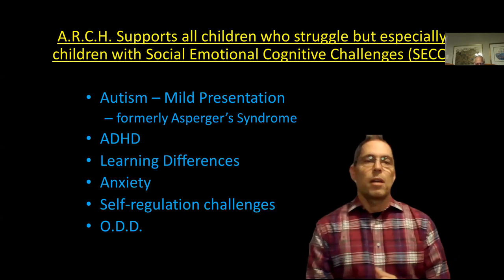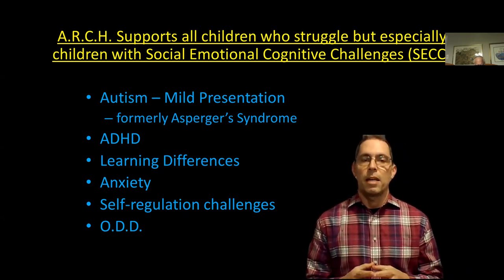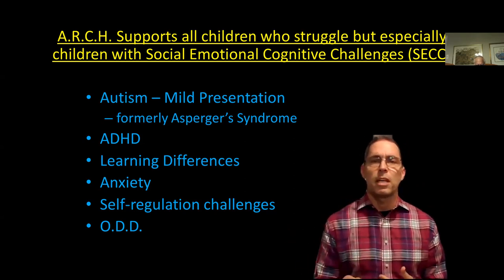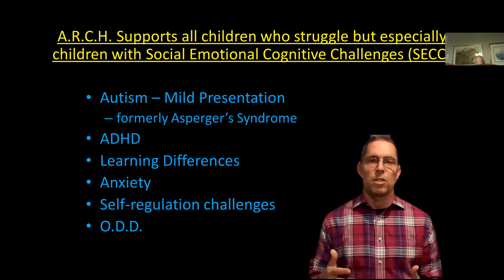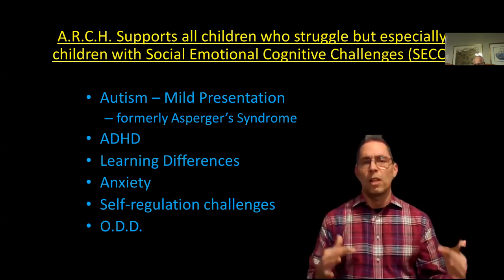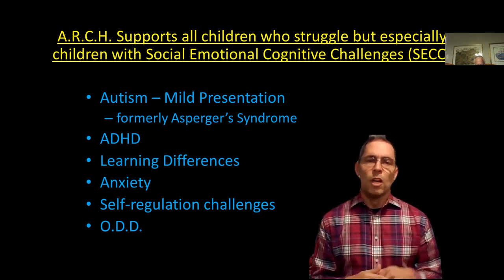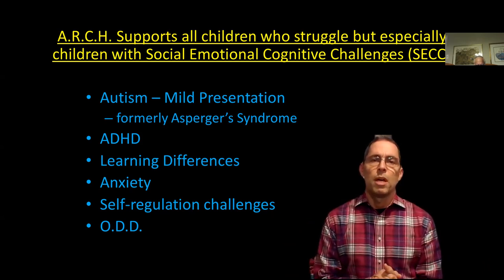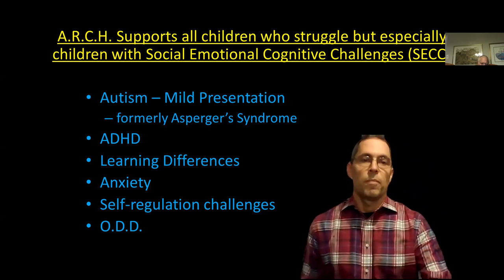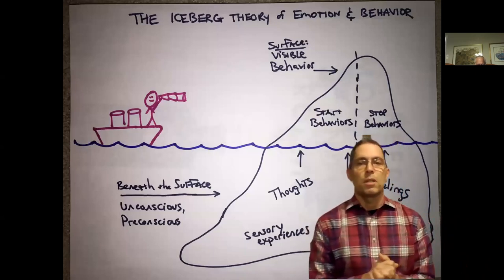I'm going to talk about the ARCH program. The ARCH is what I describe in the book — a program that wraps around a child's whole functioning. It supports all children who struggle, especially kids with social-emotional-cognitive challenges. I coined the term SECCS, which speaks to the umbrella category of kids with neurodevelopmental differences — neurodiverse kids who process differently. This could be autism, ADHD, learning differences, along with simultaneous anxiety and self-regulation challenges.